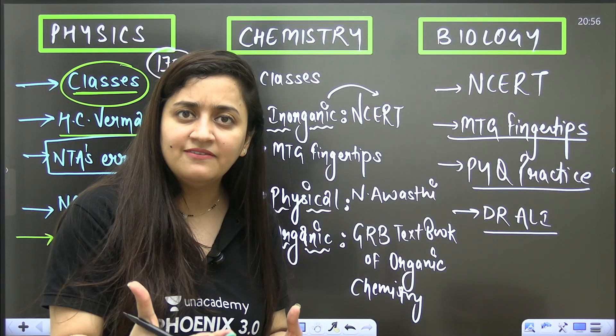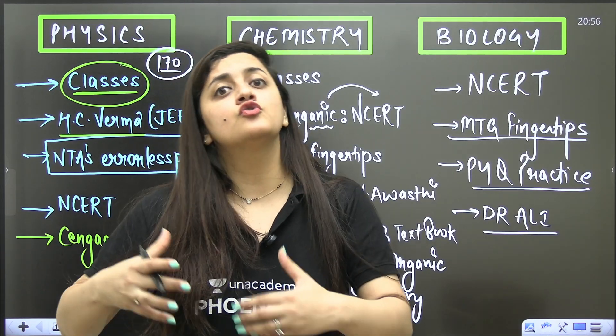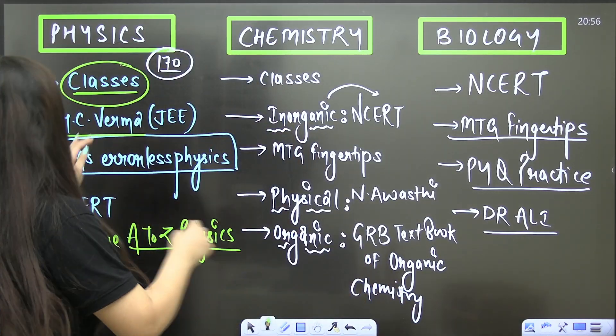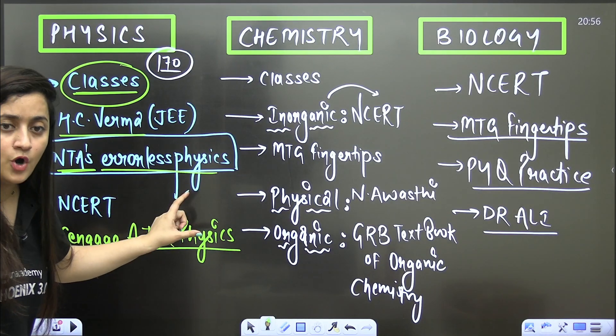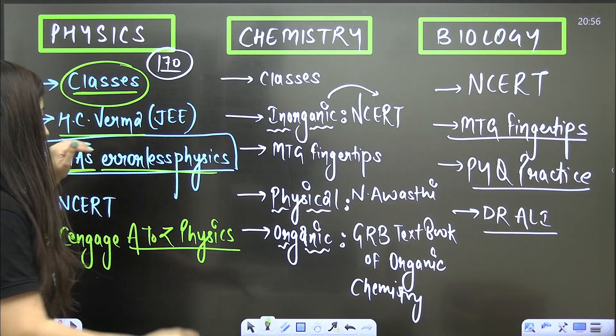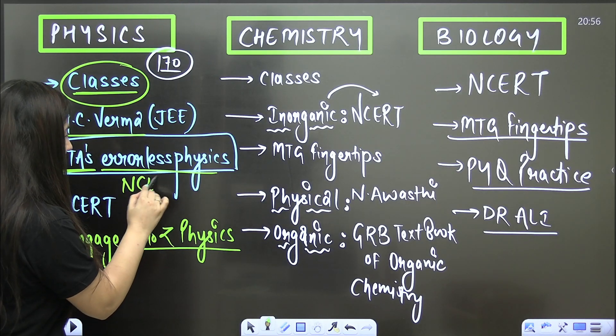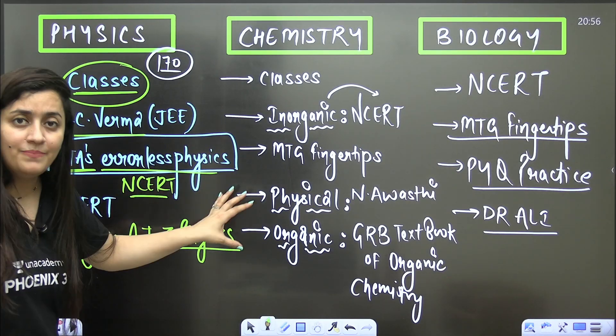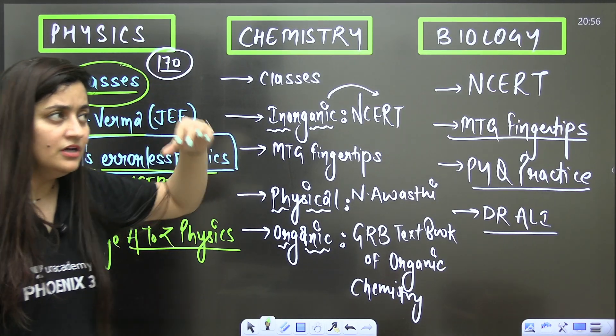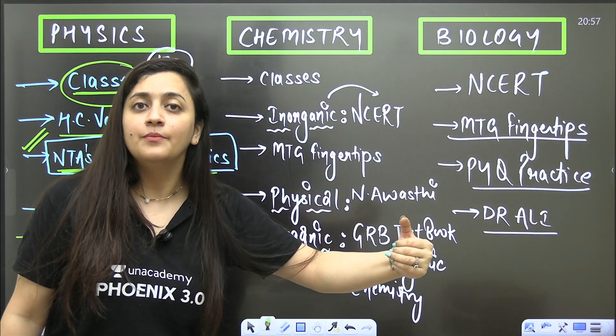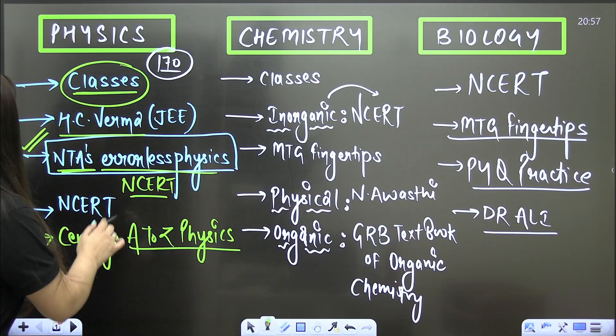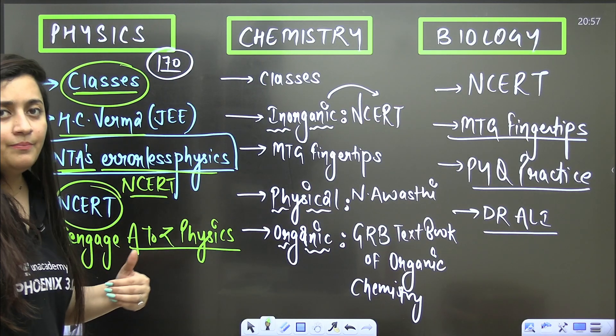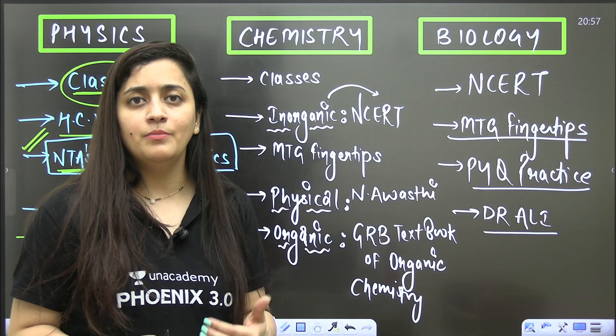I will recommend that you people can go for NTA's Errorless Physics. In this particular book you will get the notes as well as the problems also. Let's say if there is any chapter, you will get the theory part plus you will get the problems to solve. This book is really going to help you people. With the help of that, even you will be able to cover your NCERT problems, and after completing your classes, your practice, then you can read the NCERT.